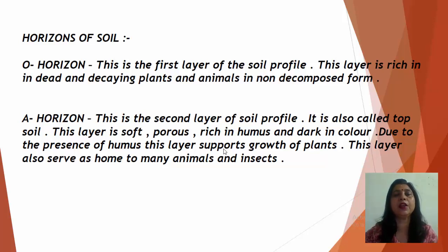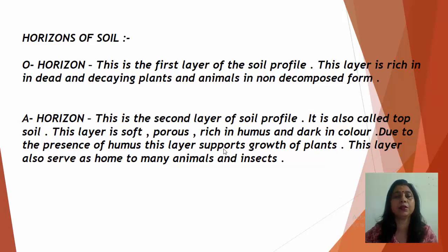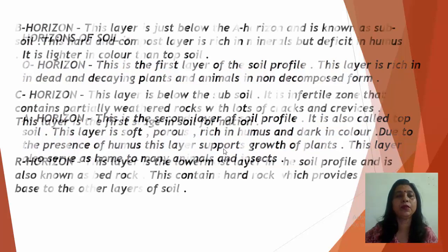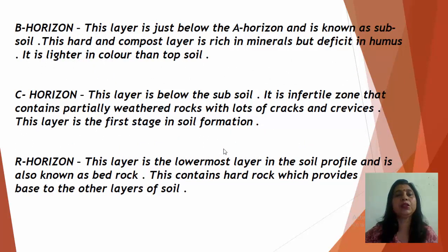After that comes the A horizon, which is the second layer of the soil profile and is also called topsoil. In your previous classes you studied three layers of soil: topsoil, subsoil, and bedrock. This topsoil — the A horizon — is soft, porous, rich in humus, and dark in color due to the presence of humus. This layer supports the growth of plants and serves as a home to many animals and insects. It is the most important and fertile layer of the soil.